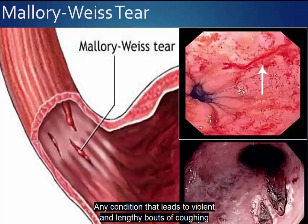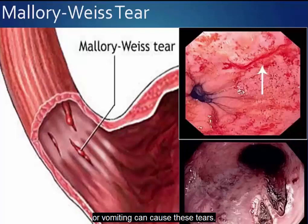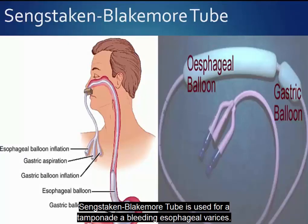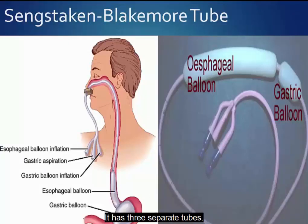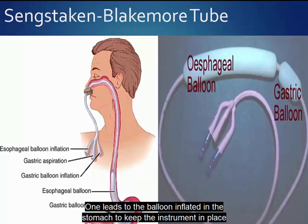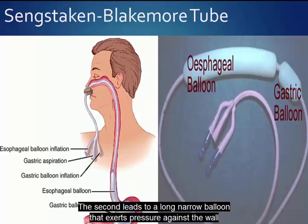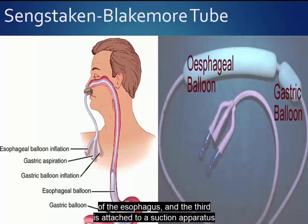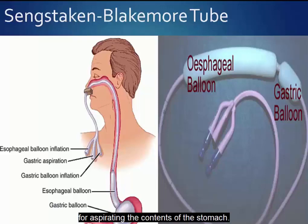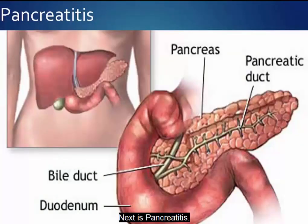Any condition that leads to violent and lengthy bouts of coughing or vomiting can cause these tears. The Sengstaken-Blakemore tube is used for tamponade of bleeding esophageal varices. It has three separate tubes: one leads to the balloon inflated in the stomach to keep the instrument in place and compress the vessel around the cardia; the second leads to a long narrow balloon that exerts pressure against the wall of the esophagus; and the third is attached to a suction apparatus for aspirating the contents of the stomach.